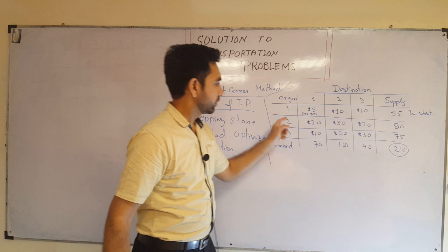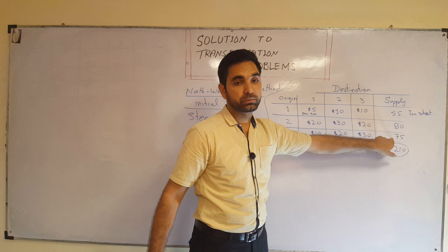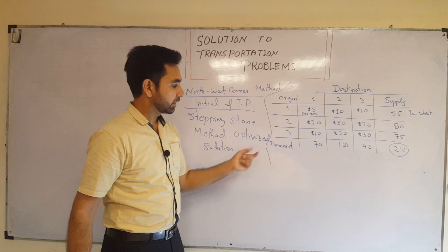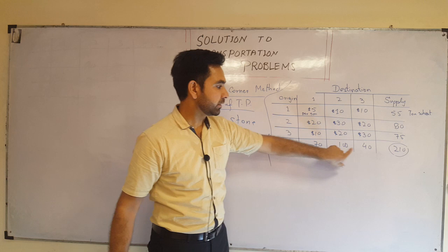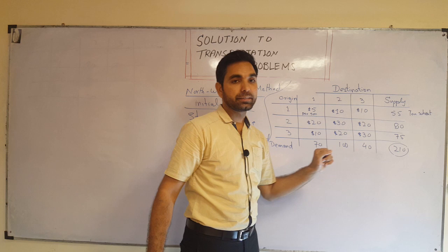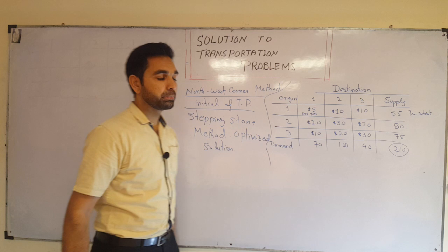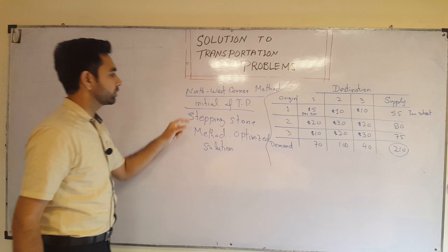From Origin 2 to City 1 is twenty dollars, to City 2 thirty dollars, to City 3 twenty dollars. From Origin 3 to City 1 ten dollars, to City 2 twenty dollars, and to City 3 thirty dollars. Origin 1 has 55 tons, Origin 2 has 80 tons, and Origin 3 has 75 tons — 210 tons total. Demand in City 1, 2, and 3 are 70, 100, and 40 tons respectively, also totaling 210 tons.